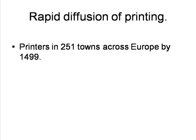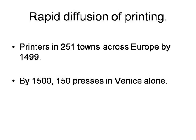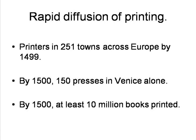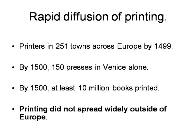The total number of towns in which printing had been established mounted rapidly, particularly from the 1470s onwards, such that by 1499 printers had set up shop in some 251 centres across Europe. By 1500 there were some 150 presses in Venice alone, and these had produced more than 4,000 editions — approximately one-seventh of all the works that had then been printed in Europe. The total number of printed books in circulation is likely to have been at least 10 million volumes. Significantly, printing did not spread widely outside of Europe and its overseas colonies, a fact of crucial importance in tracing the subsequent struggle between traditional and innovative ideas worldwide.